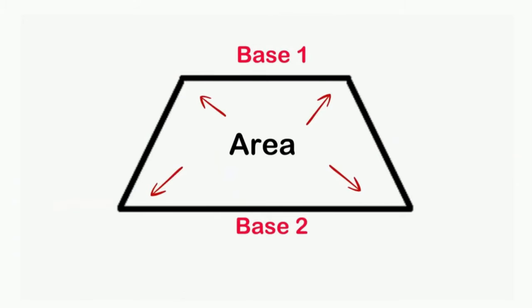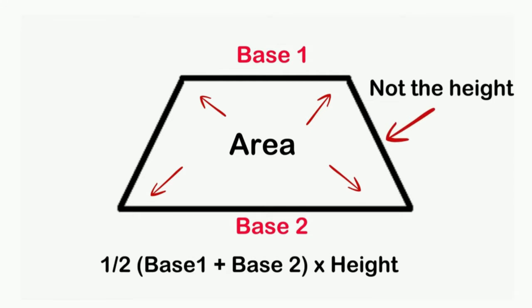The area of a trapezoid is found by taking one half times base 1 plus base 2 times the height. The height is not the side length but a line that is perpendicular to the base. This is important.